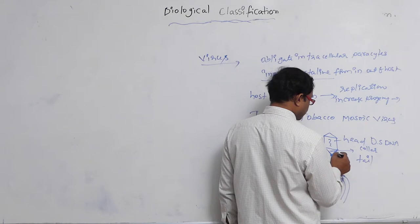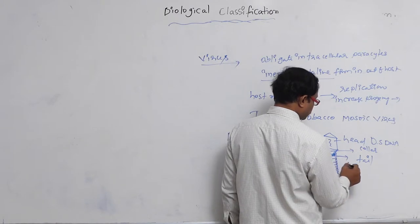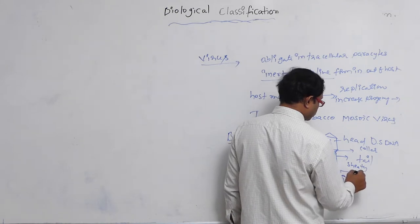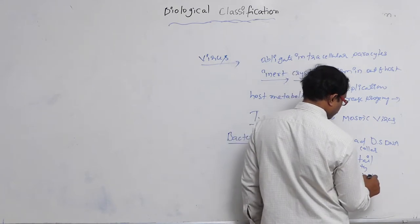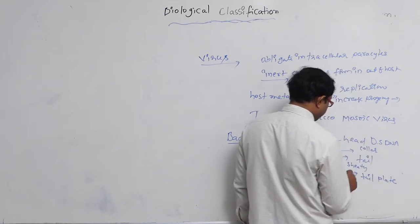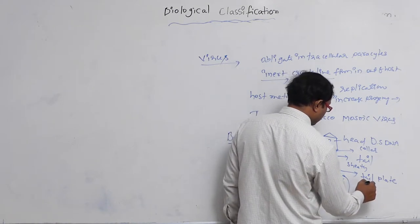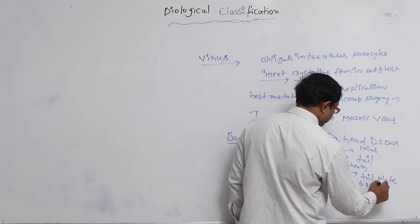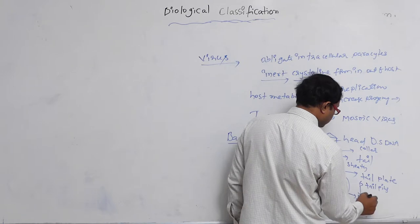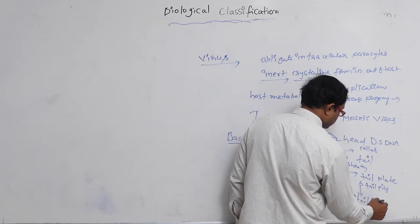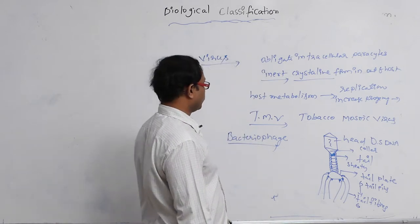Below the tail, there is the tail core, which is surrounded by the tail sheath. Below the tail sheath or tail core, a hexagonal plate is present, known as the tail plate. Each tail plate has pins known as tail pins — totally six tail pins are present. Each tail pin produces tail fibers, also six in number. By using tail fibers, the bacteriophage attaches to the host cell. That is the structure of the bacteriophage.